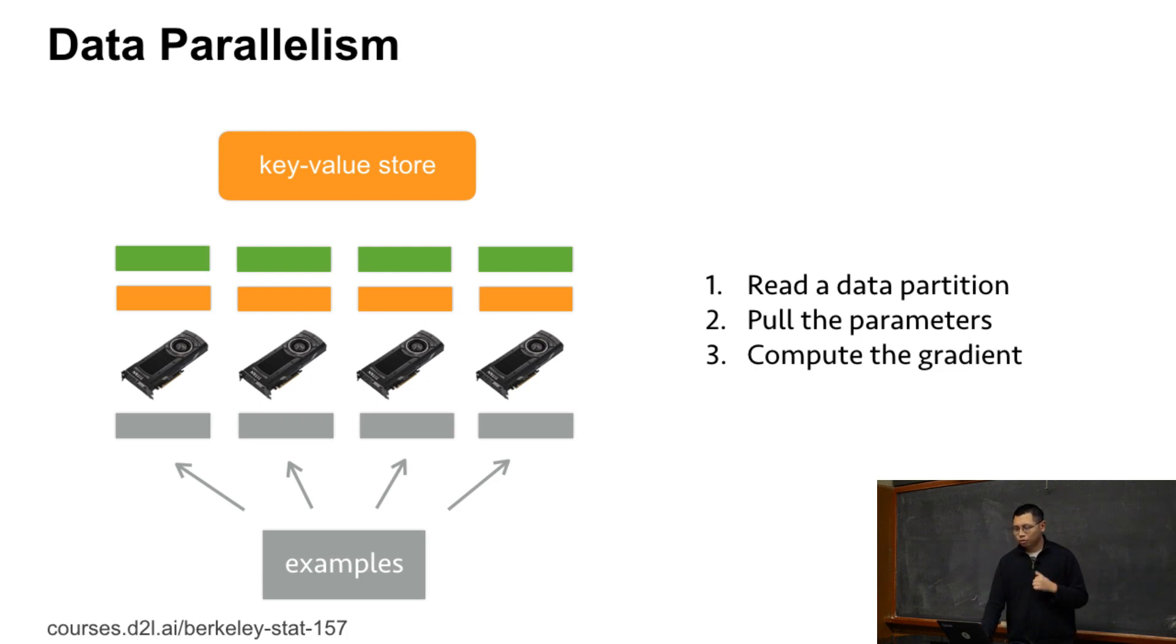Once you have the gradient ready, we just send the gradient back to the key-value store. If we found these four gradients together, we're going to get a gradient for the whole batch we have. So then we can update the parameters here. So by this one we finish one data iteration. And then we do that again and again to do multi-GPU training.